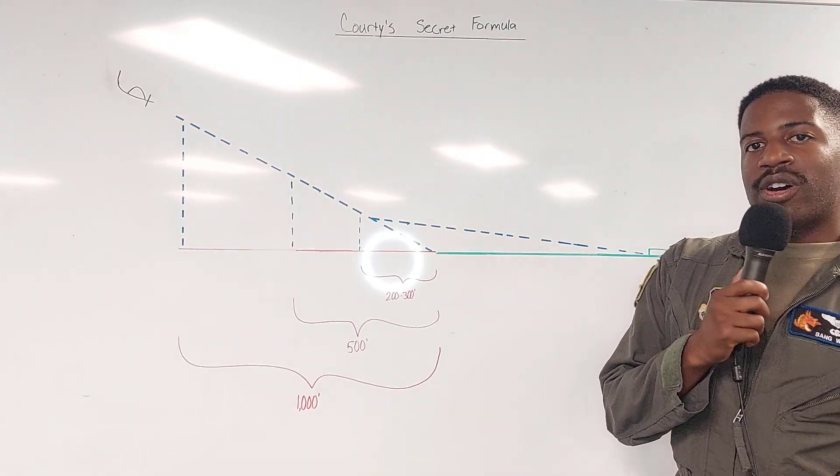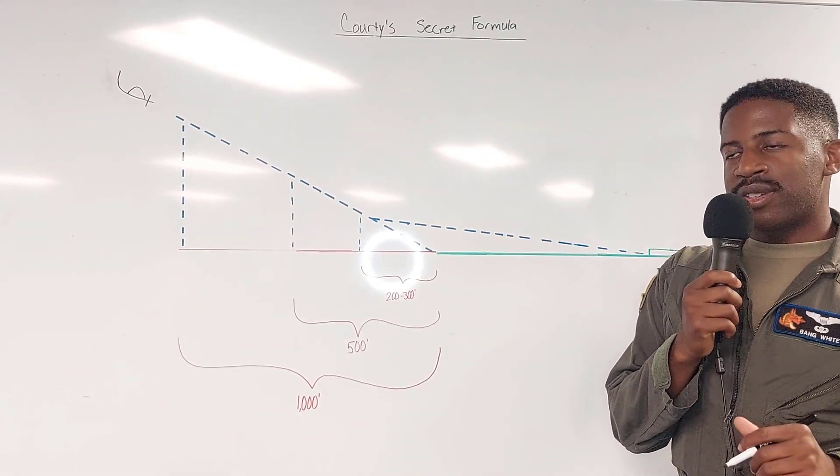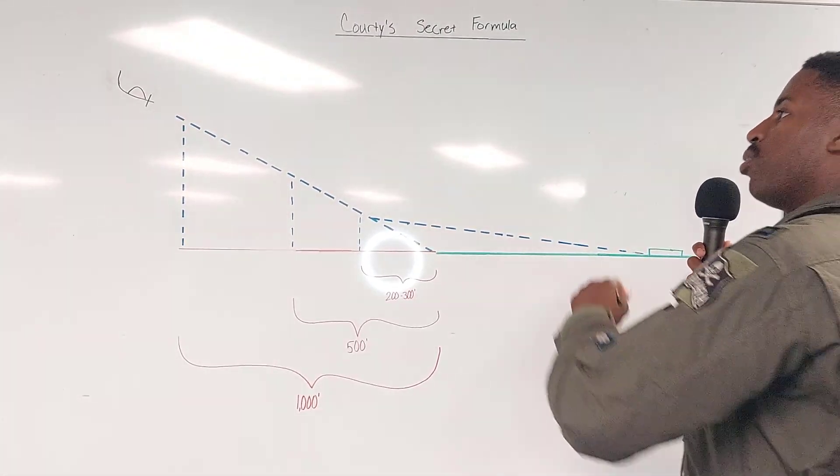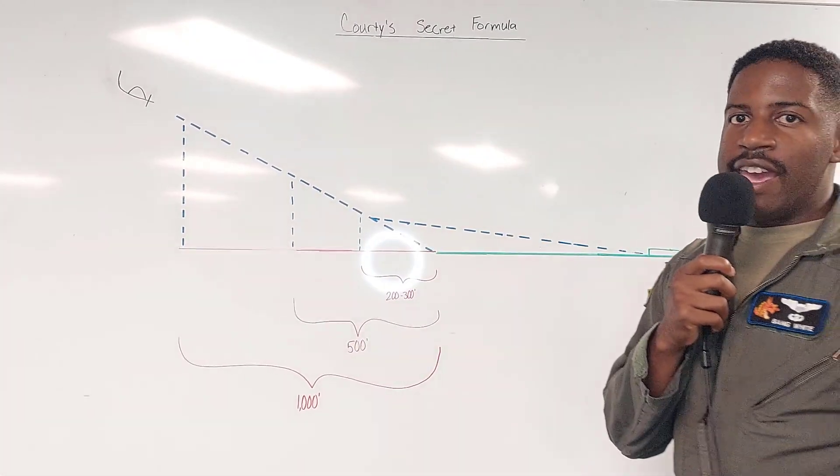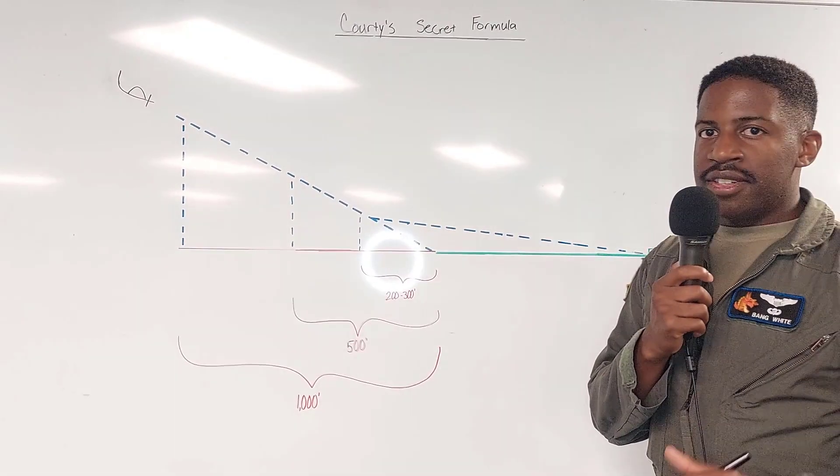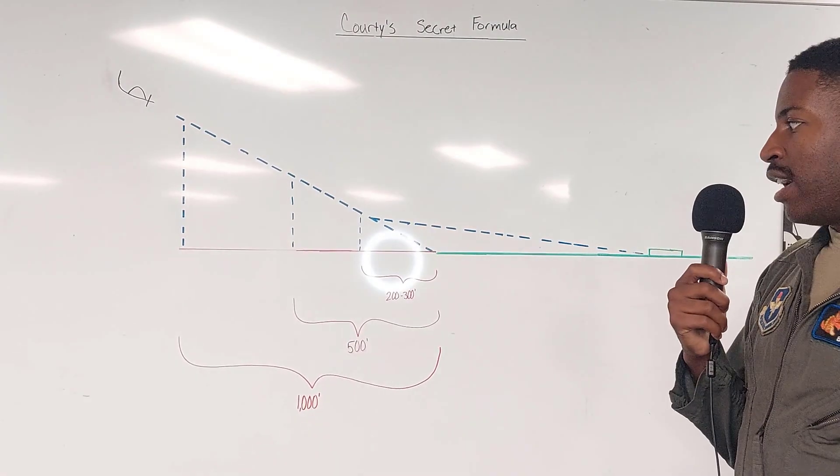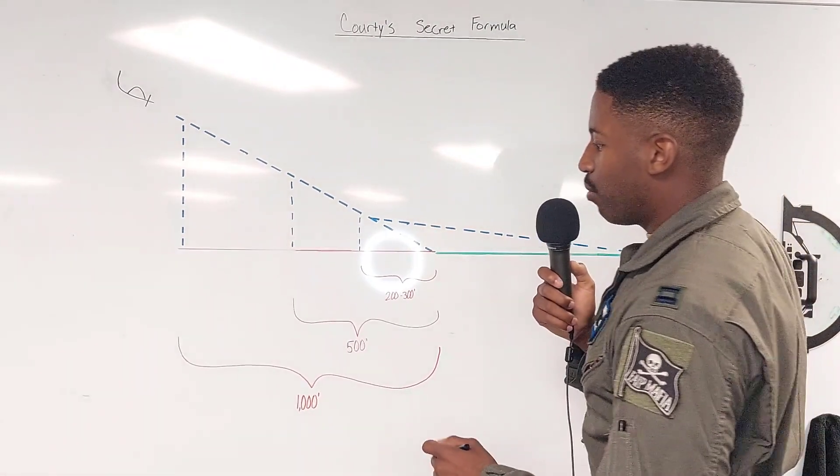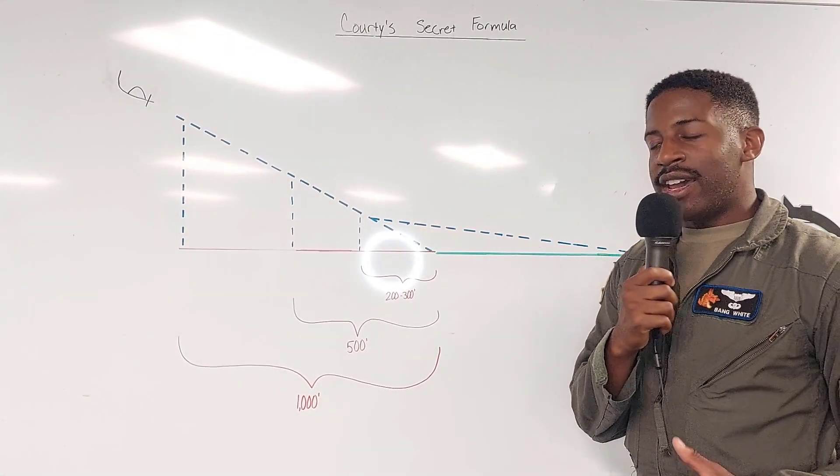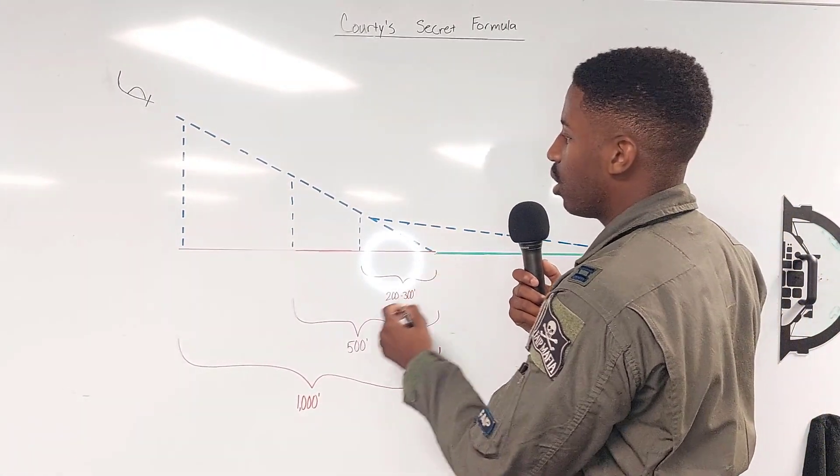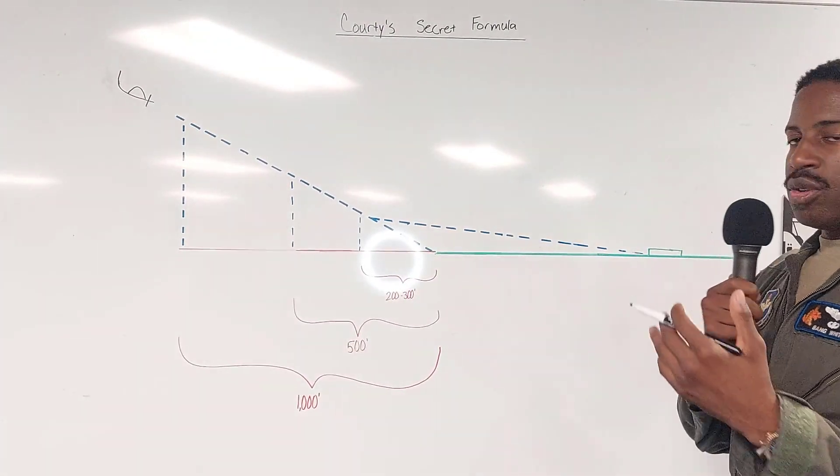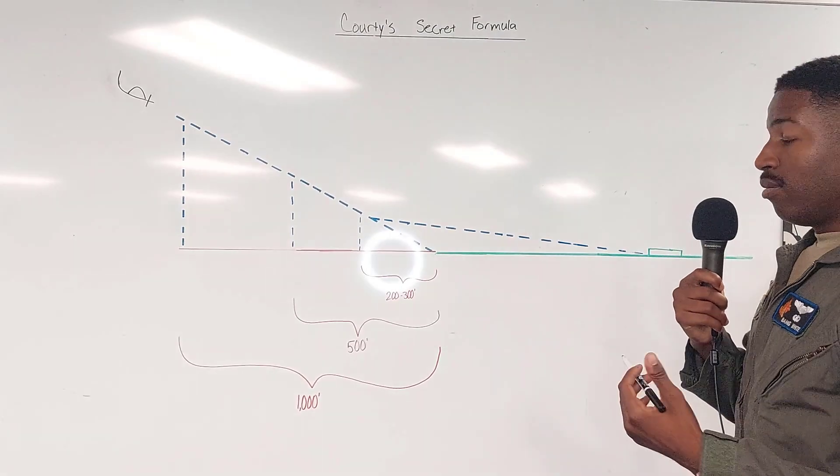So this is my secret formula on how to land a T-6. This whole process actually begins at the perch. The very first step in landing the plane is assessing your distances. This whole landing process is predicated upon you being able to accurately identify a 1,000 foot reference short of the threshold or your aim point, wherever that may be.